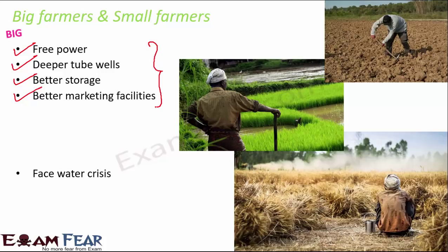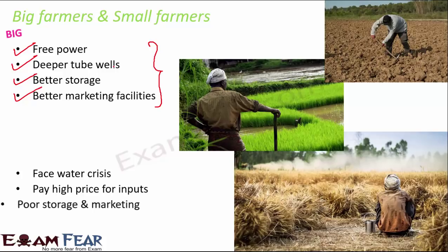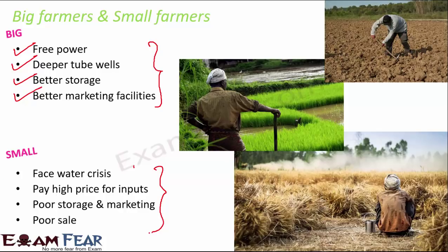On the other hand, small farmers who do not have access to these facilities face water crises, because all the water is being pumped up by the deep tube wells of big farmers. They have to pay high prices for inputs because they spend more on irrigation methods due to lack of water. They also have poor storage and marketing — when they lack money, they cannot afford good inputs, which leads to poor output, poor sales, and they remain poor farmers.